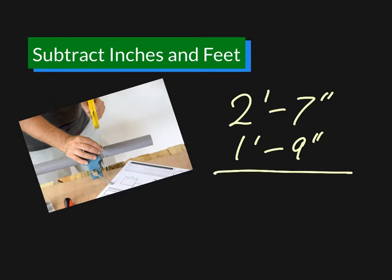Well you can't take 9 away from 7, so you're going to have to borrow from the feet. So this 2 feet is now going to be 1 foot. But remember, a foot is 12 inches. So it's 12 plus 7.